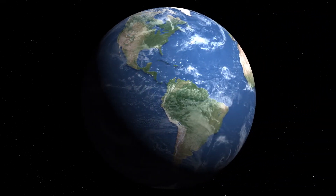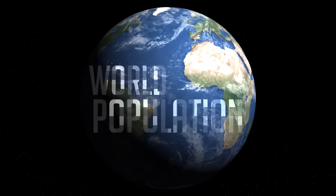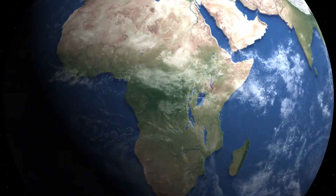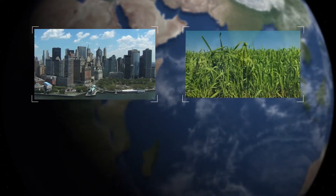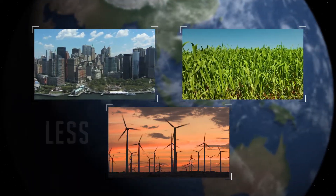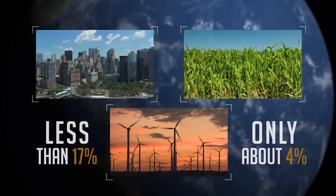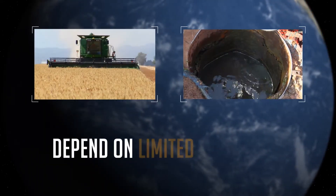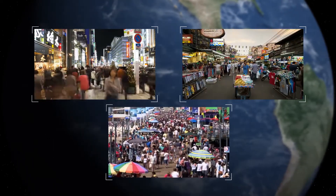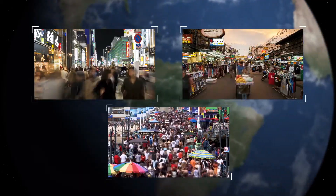An environment is a system of living things. The Earth is our environment. The capacity of our environment to provide space, to produce food, and to supply energy are all limited. Humans thrive on less than 17% of the Earth's surface, and only about 4% will grow crops. We depend on these limited resources for our survival, yet we are increasing our population as if they were infinite. This fact is at the core of our environmental problems.